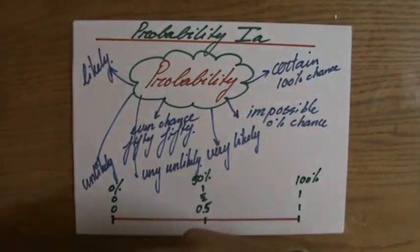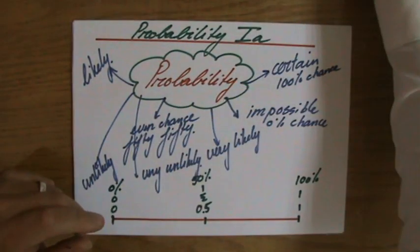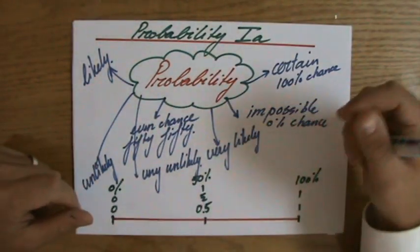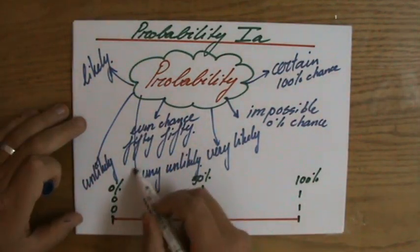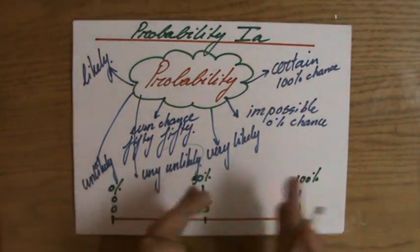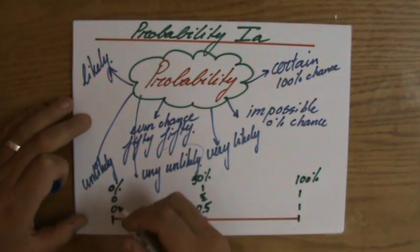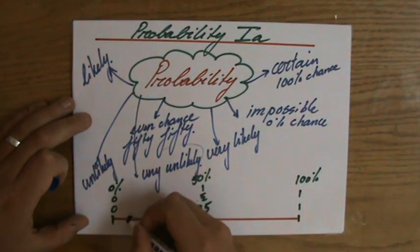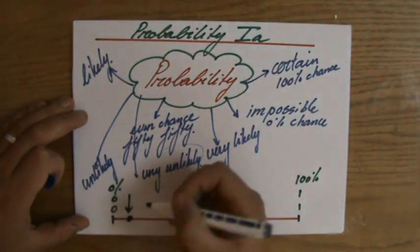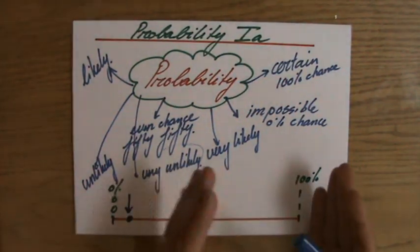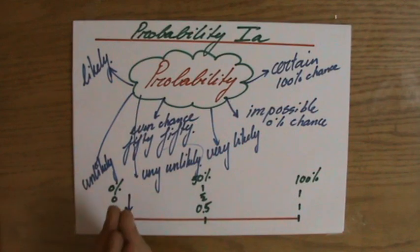So, what is the chance that it is going to rain today in Egypt? Well, that is very unlikely. So if I would have to draw that on my probability line, I would say that's going to be somewhere here. The chance that it's going to rain in Egypt today. It is not impossible, but it's very unlikely.